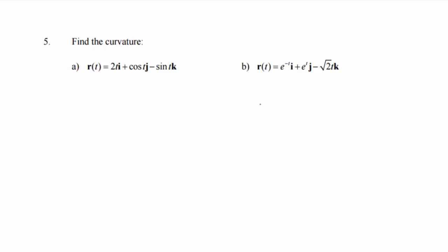But there is another formula for finding curvature. K of T equals magnitude T prime of T divided by magnitude R prime of T. So if you know T prime of T, basically, then finding its magnitude is no big deal. And if you know T prime of T, you're going to know R prime of T. And the thing is, in the previous problem,